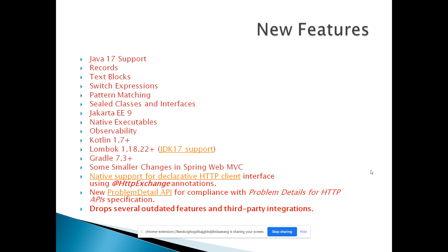Also, sealed classes and interfaces — these allow you to limit inheritance by permitting only specific parent classes. And a major change is the Jakarta EE 9 migration: the package import statements changed from 'javax.*' to 'jakarta.*', which is a significant change.